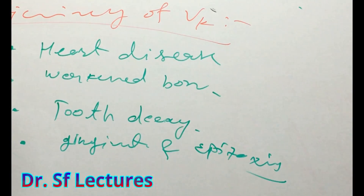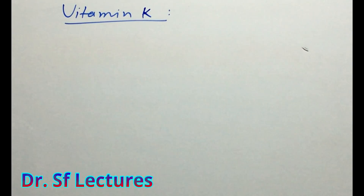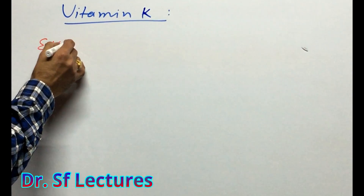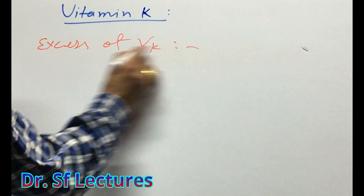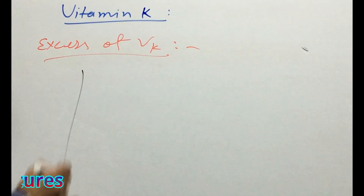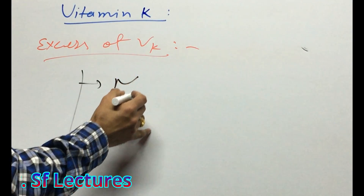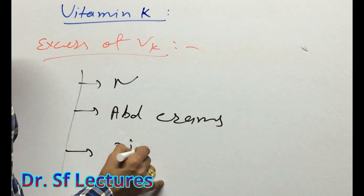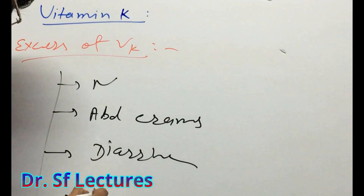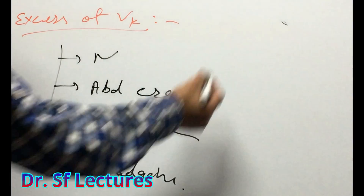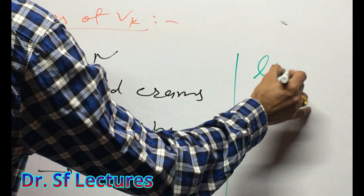Vitamin K deficiency can cause gingivitis — gum bleeding — and epistaxis, which is nose bleeding. What will happen when somebody takes Vitamin K in excess? Excessive Vitamin K can cause general symptoms like nausea, abdominal cramps, and diarrhea, as well as headache.